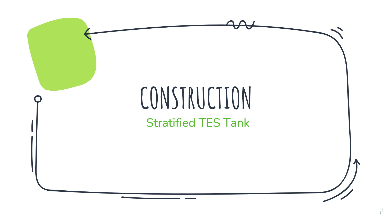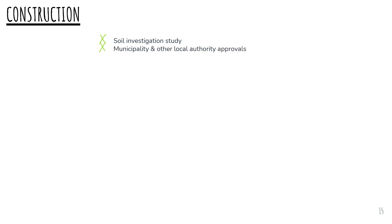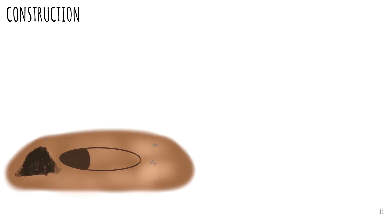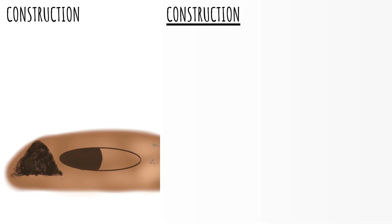Let us now discuss various steps in the construction of TES tank in general. A soil investigation study will be carried out to determine the type of piling and foundation requirement after taking the soil strata from the site. Municipality and other local authority approvals will have to be obtained based on the design drawings and site conditions. Excavation for foundation and piling will be done by machine excavators or manual excavation.